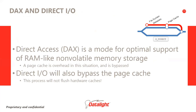DAX, an abbreviation of direct access, is a mode supported by some file systems — namely EXT2, EXT4, and XFS — to optimally support RAM-like non-volatile memory storage. Such devices can be read and written just as fast as RAM, so the page cache is unnecessary overhead, and DAX bypasses that overhead. Another bypass mode is DirectIO, from files accessed with the O_DIRECT flag, which also bypasses the page cache, but in the process will not flush the hardware cache. Even that's not completely sufficient to guarantee complete reliability.